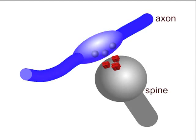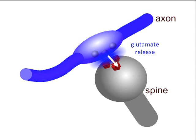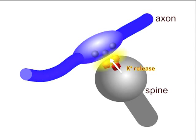Those changes in ionic concentration can be of any ion involved in synaptic signaling. In particular, during synaptic transmission, generation of action potentials, and their propagation in axons, we have accumulation of potassium.